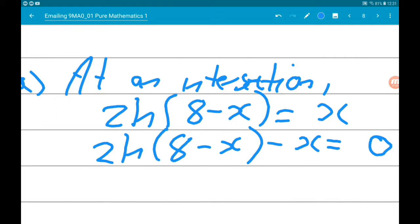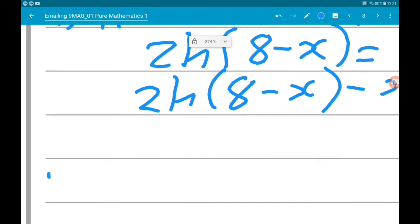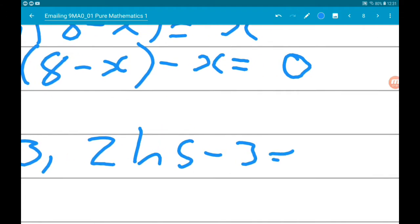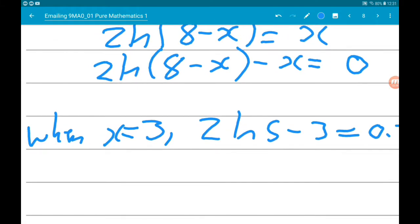So now we can use the old change of sign test to see if there is indeed a root between three and four. So when x is 3 we get 2 log of 5 minus 3 and that gives us 0.219. And then when x is 4, we get 2 log 4 minus 4 and that gives us minus 1.23.